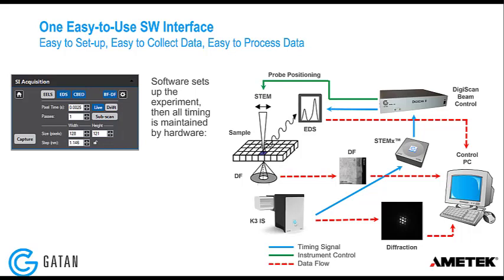The camera is the timing master, and we use hardware synchronization, so we collect 4D STEM data sets at the speed at which the camera is operated. With OneView you can go from 25 to 300 frames per second depending on binning. With K3IS you can go from 150 frames per second up to more than 3,500 frames per second by reading out smaller sub-areas of the sensor.